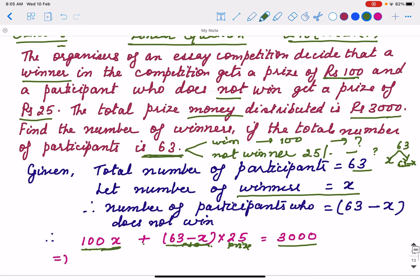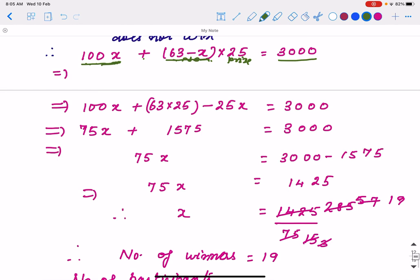Now we have to simplify only. How we will simplify? 100 into X, 100X plus 63 into 25. 63 into 25, then minus sign 25 into X. RHS is 3000. Now, 100X and 25X are like terms. So, and it is minus sign. So we subtract. So it is 75X. If 63 and 25 you are multiplying, then 25, 3, 75, 7 is there. 25, 6, 150 plus 7, 15, 75 is 1575. RHS is 3000.